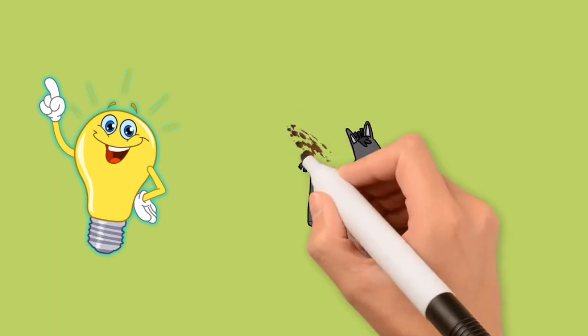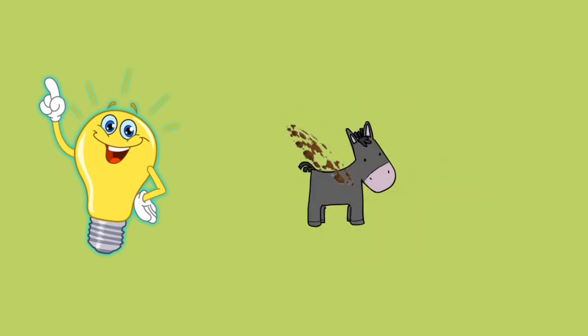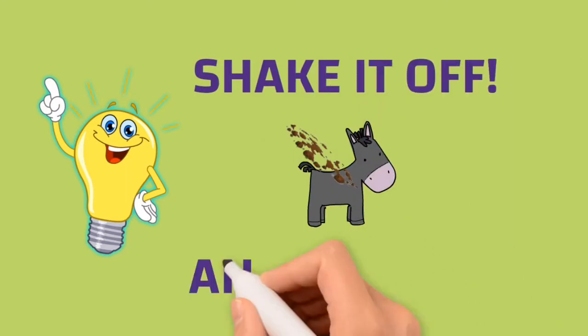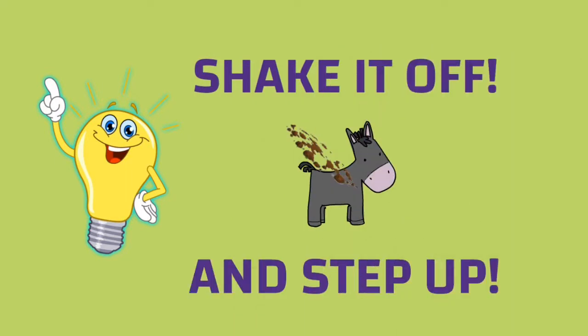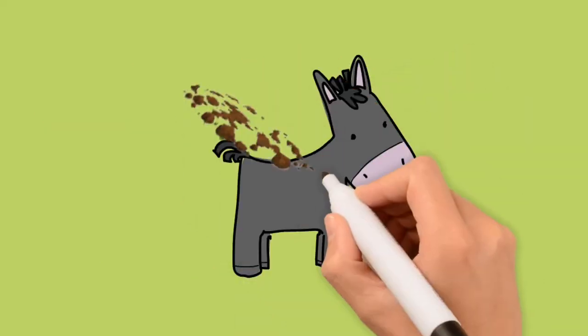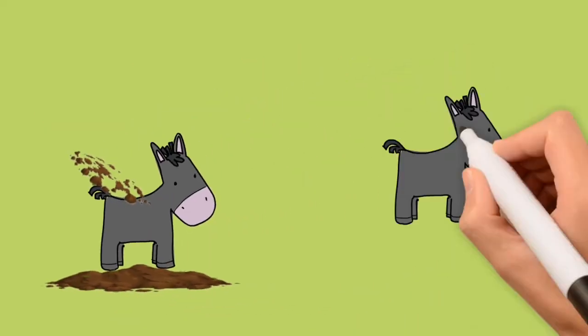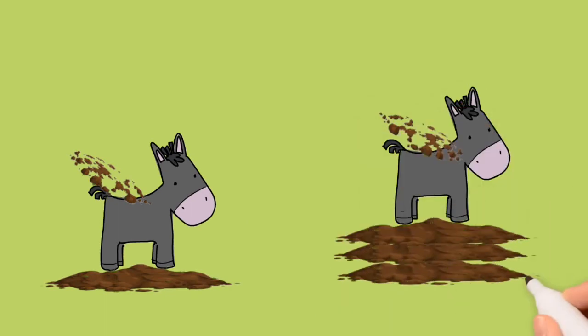He did this, dirt after dirt. Shake it off and step up. Shake it off and step up. He repeated this to encourage himself. No matter how painful the blows or distressing the situation seemed, the old donkey just kept right on shaking it off and stepping up.